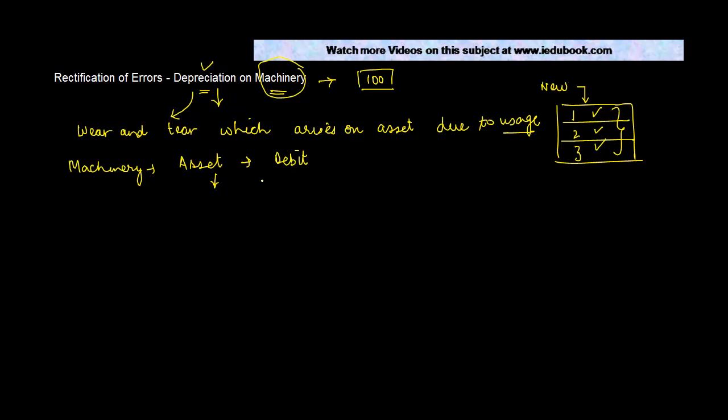Let's say the depreciation was 100. What will you debit? You debit depreciation account. Depreciation is basically an expense, and when you incur an expense that is debited by 100. So this is the normal entry which you make for depreciation. Now let's see what kind of errors are possible.